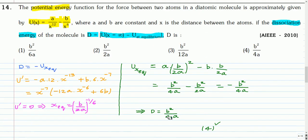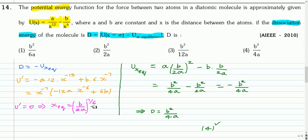Here is the solution. The dissociation energy is u(∞) minus u at equilibrium. At x = ∞, the denominator becomes very large and since a and b are finite, u → 0. So D equals minus the potential energy at equilibrium. To find equilibrium, differentiate u with respect to x and set it to zero, giving x = (b/2a)^(1/6). Substituting this back into u gives u_eq = −b²/4a. Therefore, the dissociation energy D = b²/4a, and the correct option is option 4.